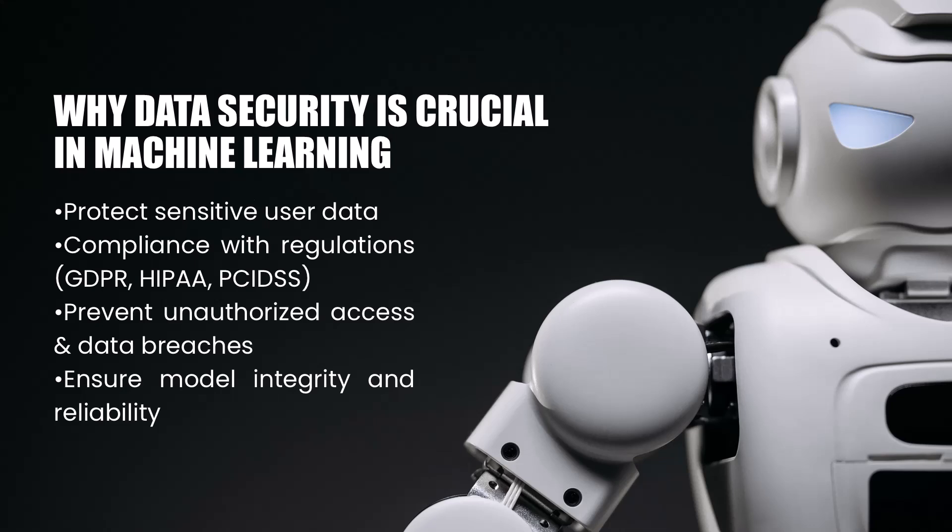Beyond compliance, security breaches can destroy customer trust and compromise your competitive edge. Even more concerning for machine learning specifically, compromised data can lead to poisoned models, which can render your AI investment useless or even harmful. The good news is that with proper encryption and access controls, we can build machine learning systems that are both powerful and protected. Think of these security measures as the immune system for your machine learning organisms — essential for healthy operation in today's threat landscape.